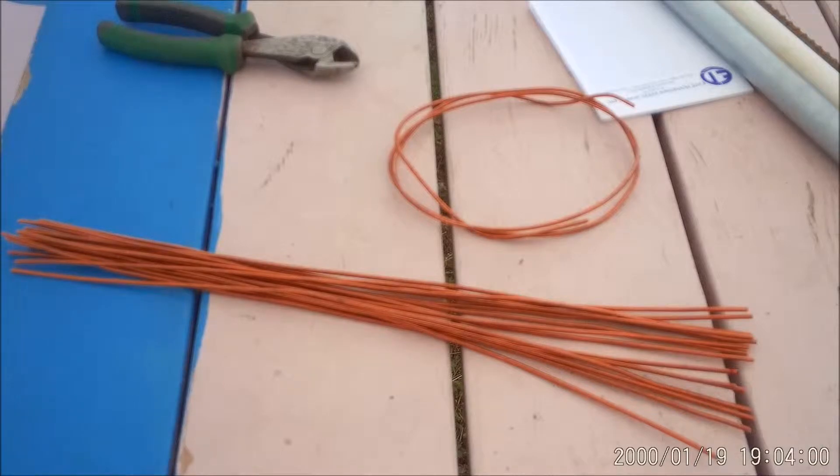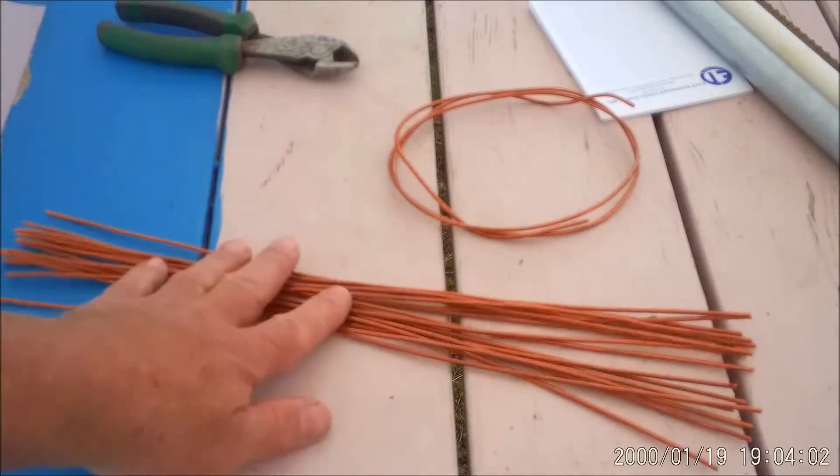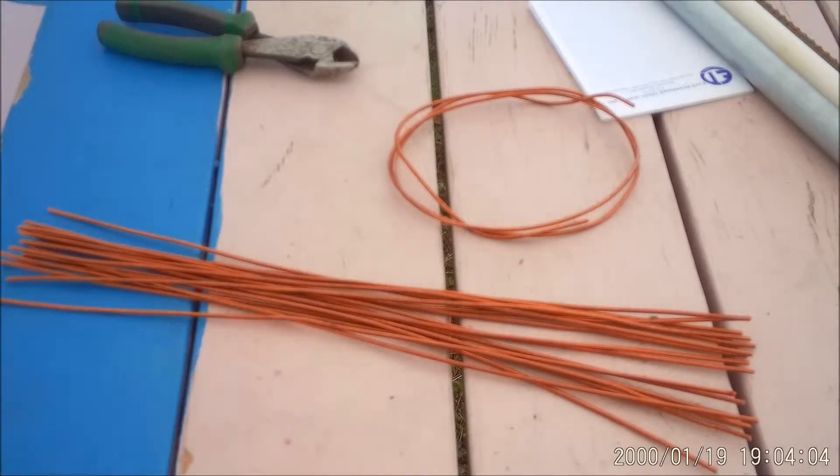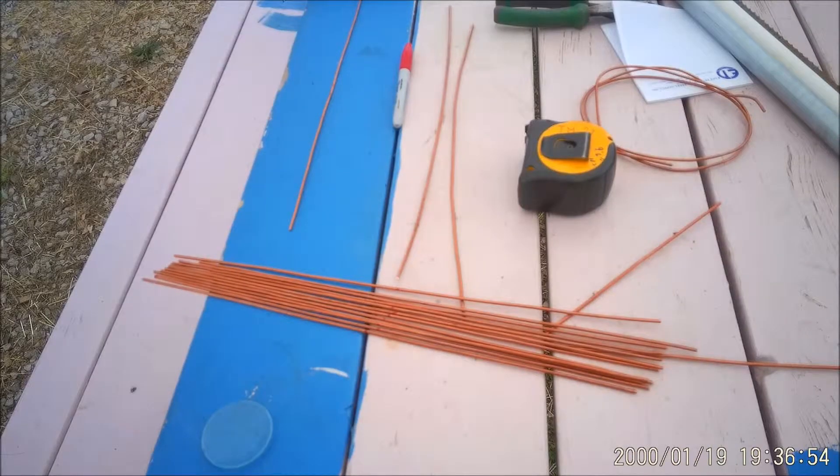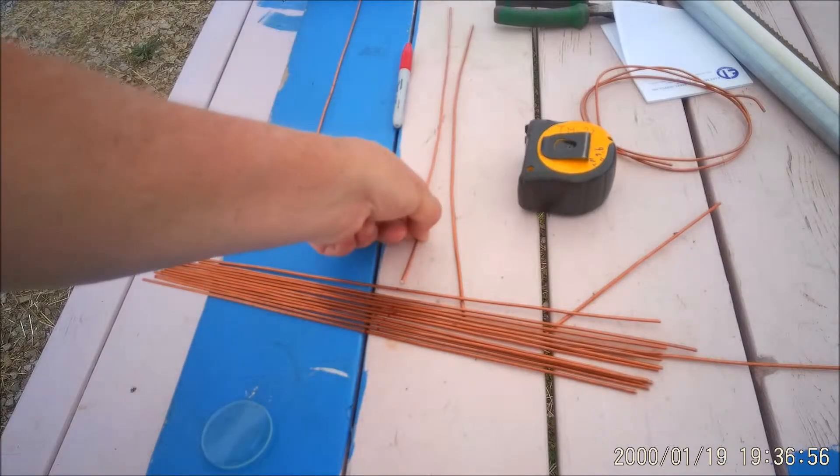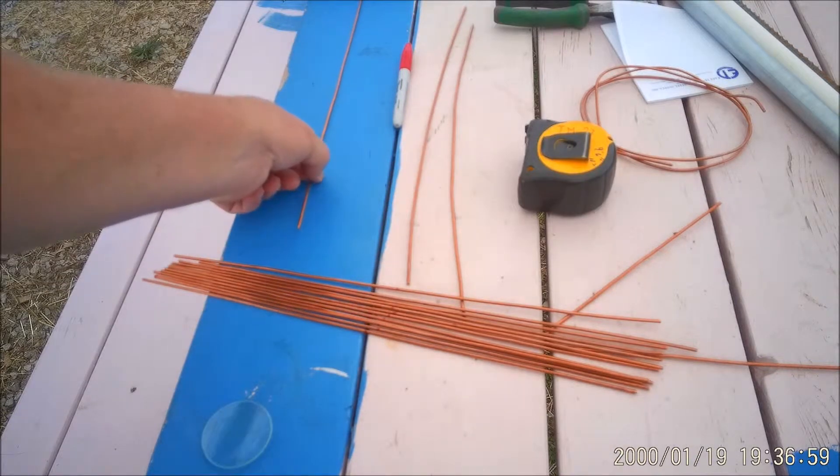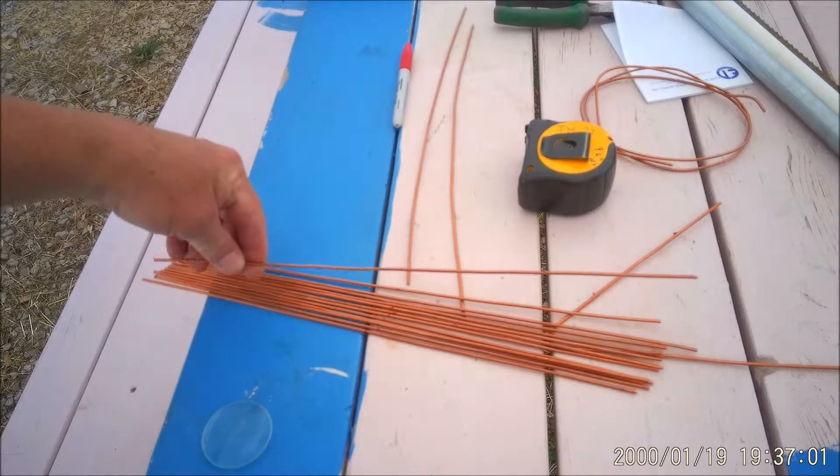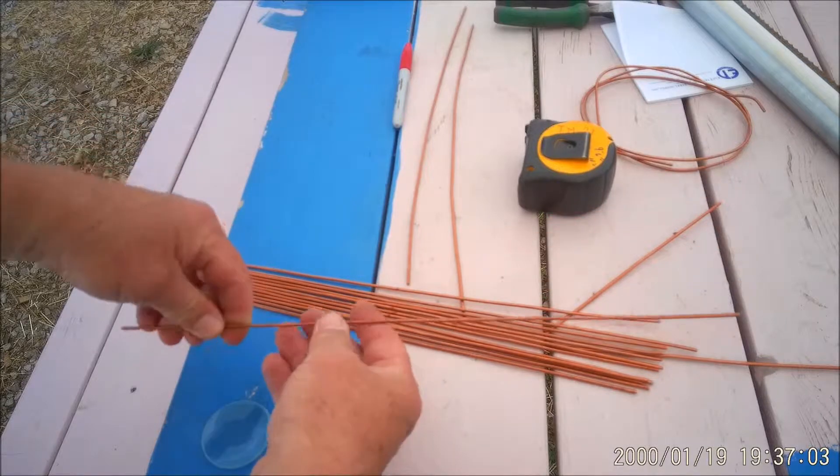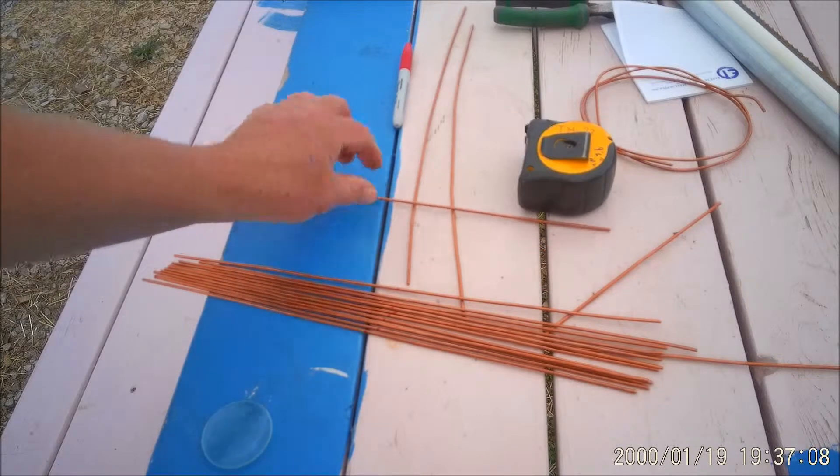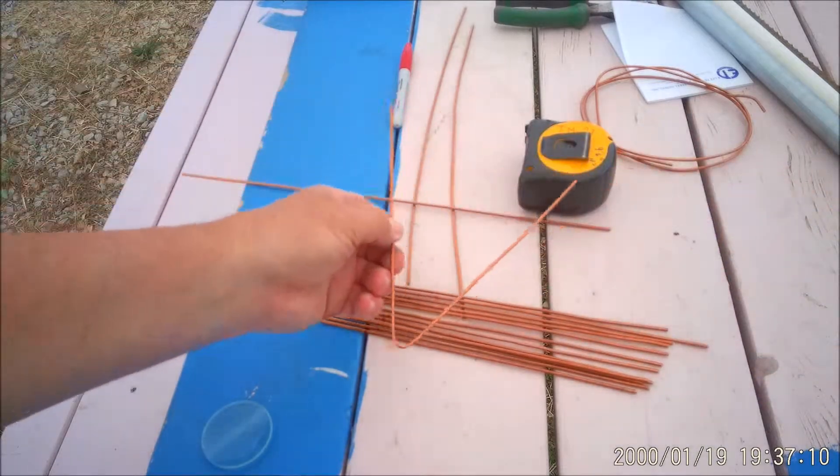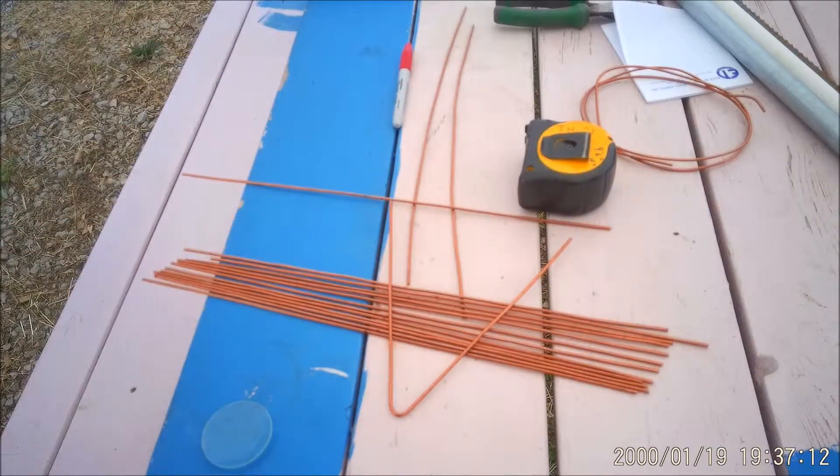All we got to do now is bend them in a V shape, right in half. So I'll find center, mark them, and then bend them in a V. You want to take these and straighten them out a little bit because they're nice and straight while you have them out, and then mark your center and we're going to go ahead and bend them all up just like that.